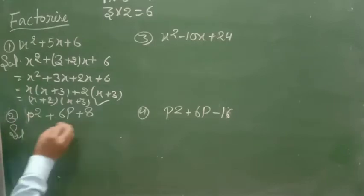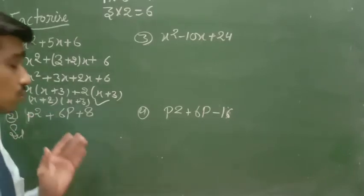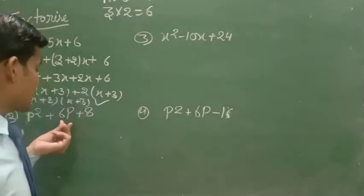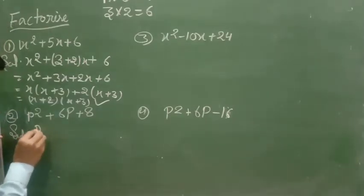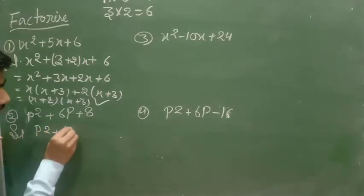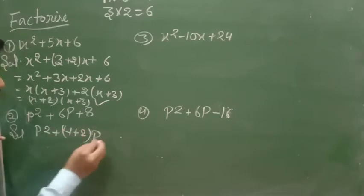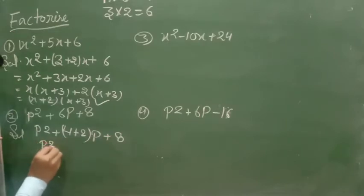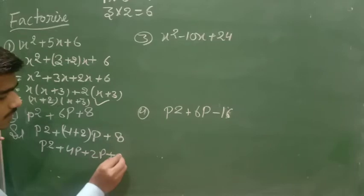Number 2: p² + 6p + 8. You need such a table that when we multiply we get 8, and when we add we get 6. That means 4 and 2. p² + 4p + 2p + 8.